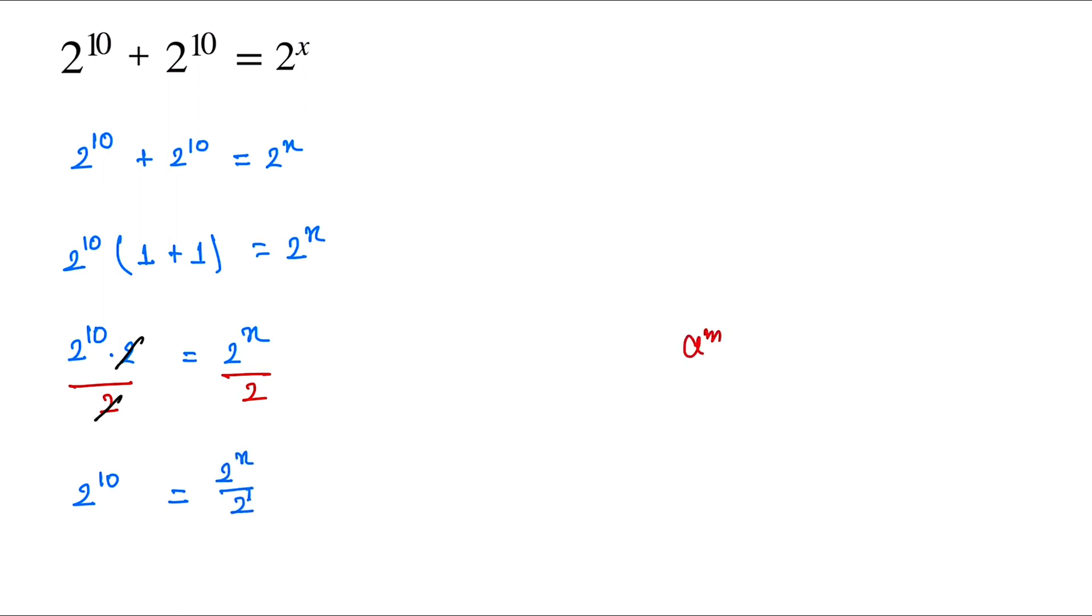Now we use the exponent rule: a^m / a^n = a^(m-n). So 2^10 = 2^(x-1).